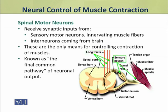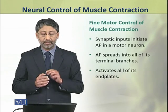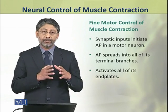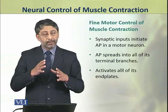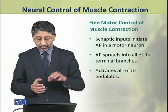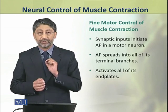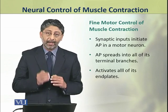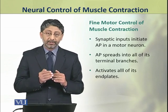Dear students, spinal motor neurons are the only means for controlling the contraction of muscles, so they are known as the final common pathway of neural output. These synaptic inputs initiate action potentials in motor neurons, and these action potentials spread to all of the terminal branches, activating all of the end plates of the fibers they innervate.